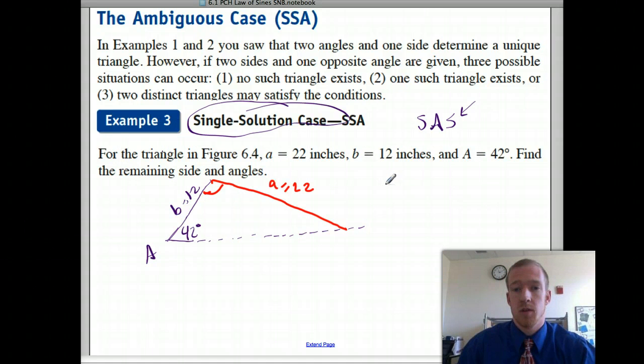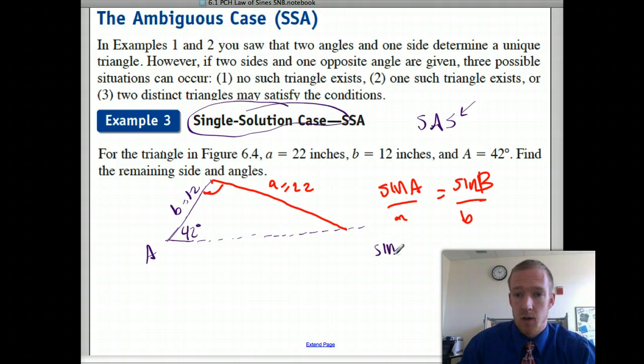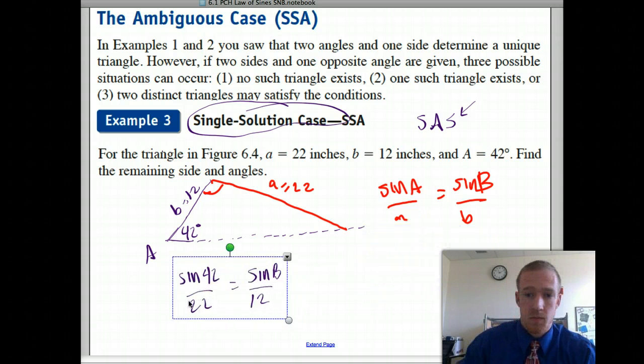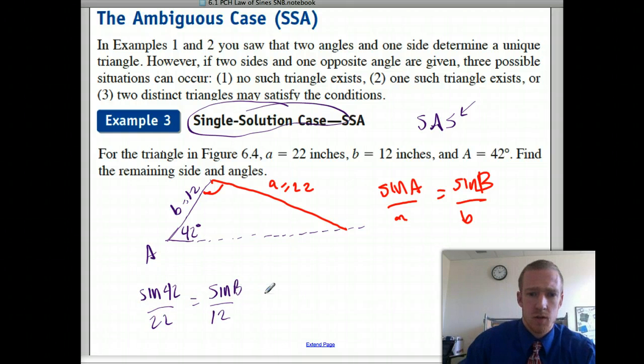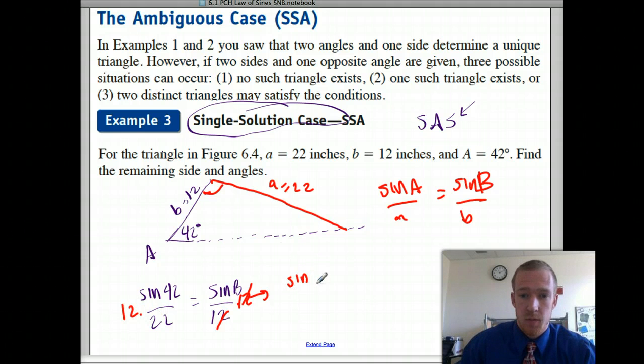Now, to solve this all we got to do is set up our ratio. Sine A over A equals sine B over B, which is sine of 42 over 22 equals sine of B over 12. And that gives us multiply both sides by 12, so I get sine of B equals 12 times sine of 42 over 22.